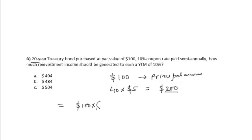So the reinvested income should be $100 times 1.05 to the power of 40 minus the sum of these two amounts, $300, which will be equal to $404.